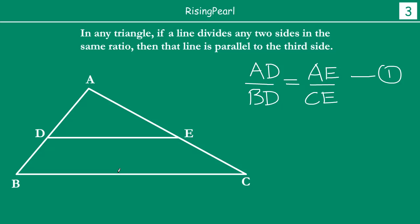Let's hypothetically think that DE is not parallel to BC and that we can draw another line in this triangle which will be parallel to BC. Starting from point D, from any given point there is only one line that can be drawn parallel to BC. So we have hypothetically picked a point E' on side AC such that DE' is parallel to BC. By construction, DE' is parallel to BC.